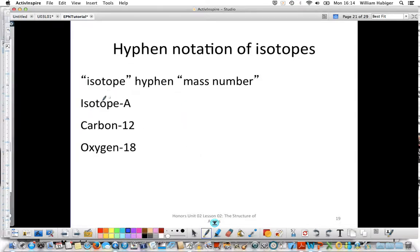The first notation we're going to look at is called hyphen notation. You basically take the element name and a hyphen and then the mass number. So here's carbon-12 and we have oxygen-18.